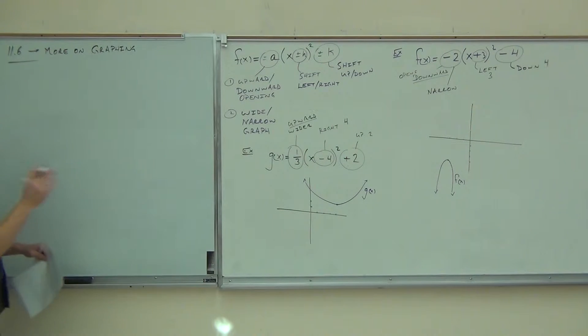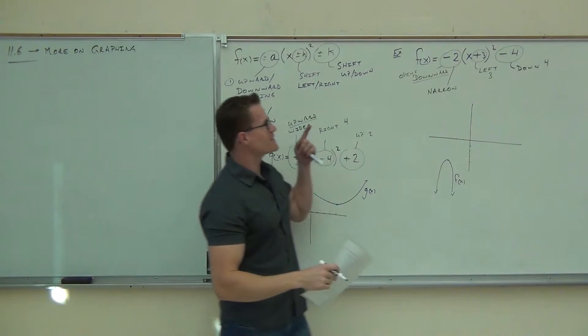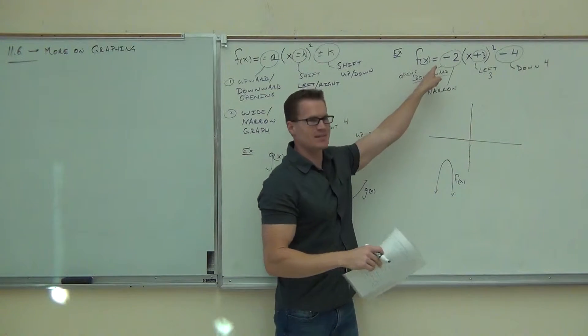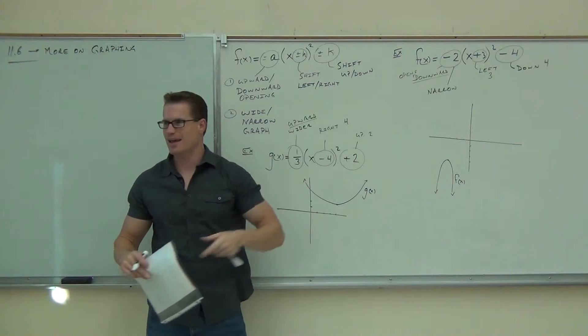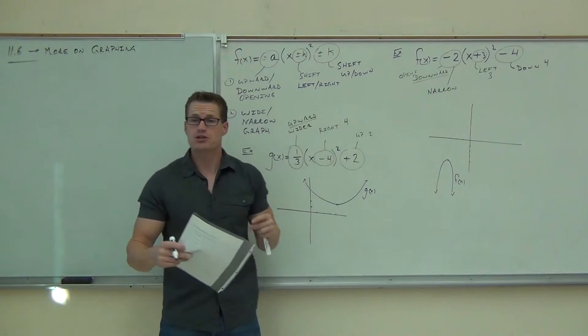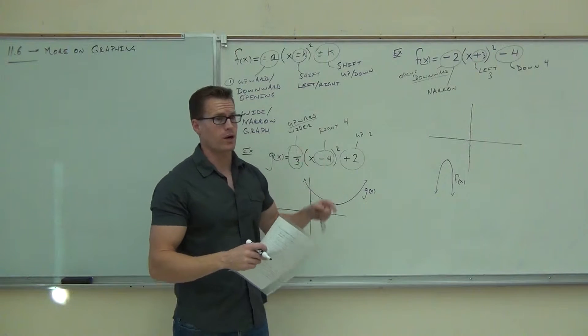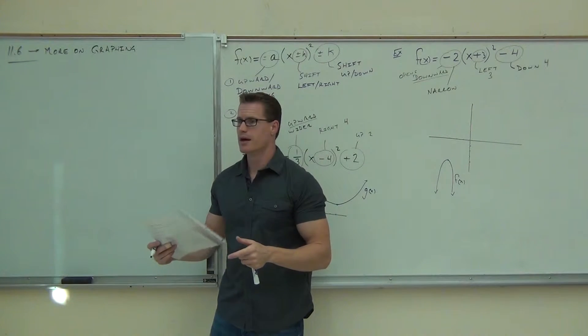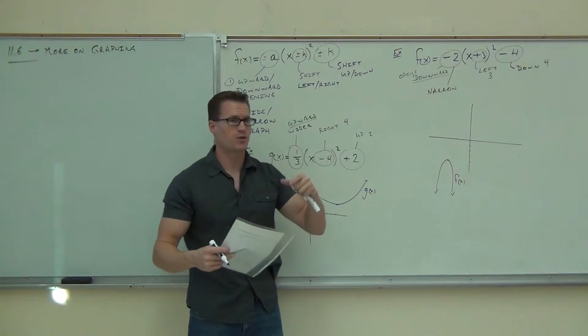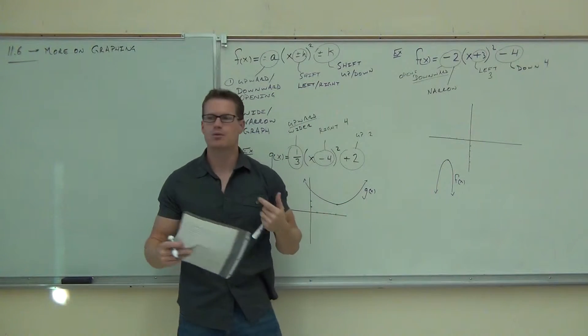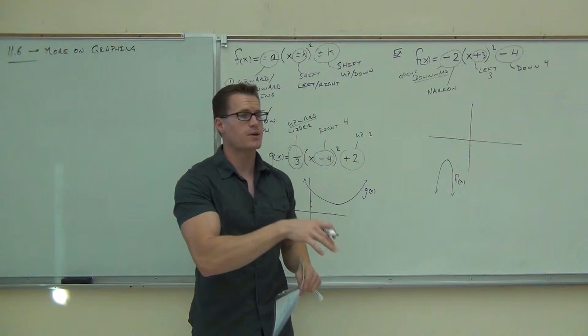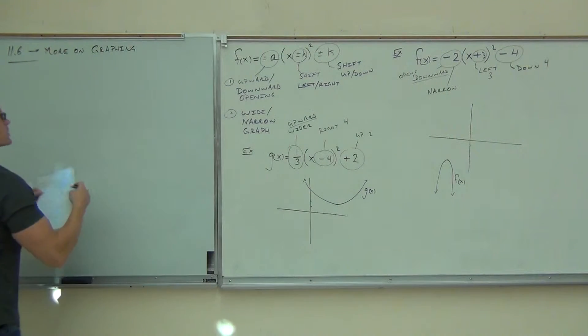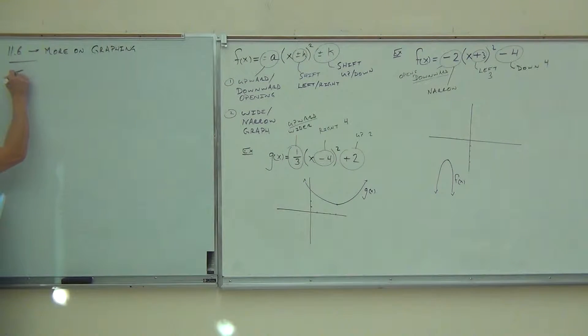You see, the problem is that we don't always get things that look like that. We don't get things that look like this. This form isn't always what we have, and we'd have to do a lot of work to make it that way. We'd actually have to complete the square in order to get this thing, and be able to factor in order to get that thing. And that's not exactly what we have all the time. We don't want to waste our time doing that. So there are some other things that we can do with just our general quadratics. For instance, like this one.